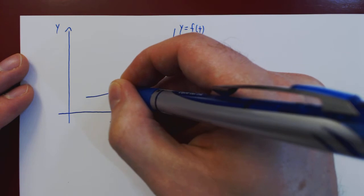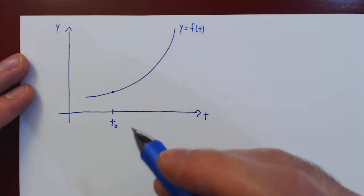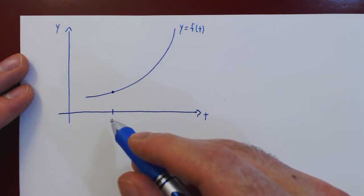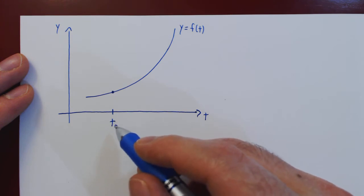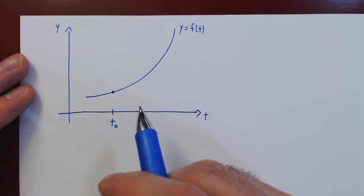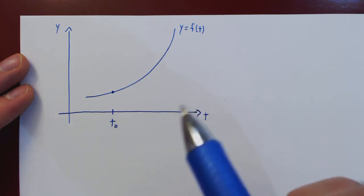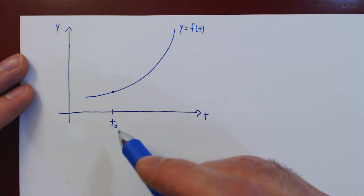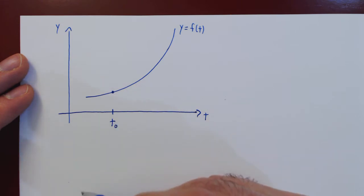If you recall, the idea was to find the average velocity over a time interval around t0, and then let the length of the time interval shrink to 0. In this way, you obtain the instantaneous velocity of the object at time t0.